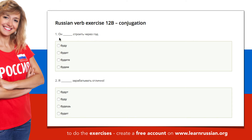The first one. Он — he. Строить — to build. Через год — after a year. The options are: буду, будет, будете, будем. Он takes the ending будет. Он будет строить через год. He will build after a year.